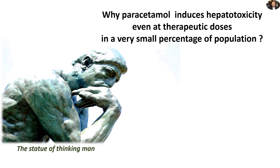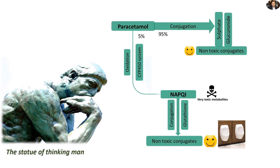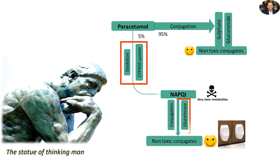The question which has confused scientists over many years is: why does paracetamol induce hepatotoxicity even at therapeutic doses in a very small percentage of the population? To answer this, we must revisit the paracetamol metabolic pathways under therapeutic concentrations. There are two explanations for this rare phenomenon: either abnormalities in the cytochrome P450 oxidation system, or abnormalities in the glutathione conjugation system.